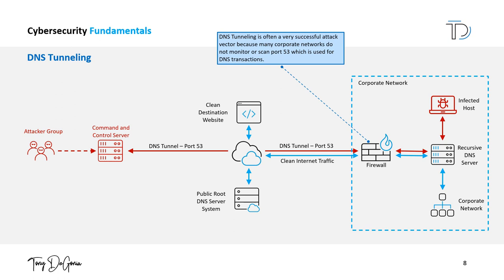DNS tunneling is commonly used by malware to communicate with its command and control servers, or C&C servers. This type of malware will typically establish a connection to a domain name that is controlled by the attacker and then use DNS queries and responses to send data back and forth between the malware on the infected device and the C&C server.